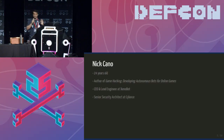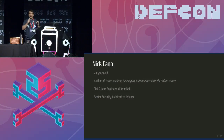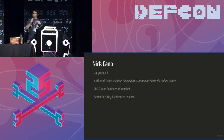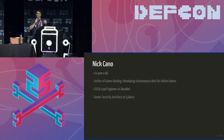I'm Nick Cano. I'm 24 years old. I wrote the book Game Hacking: Developing Autonomous Bots for Online Games. I'm the CEO and lead engineer at Xenobot, where I make and sell my own bots for online games, and I'm also a senior security architect at Cylance.